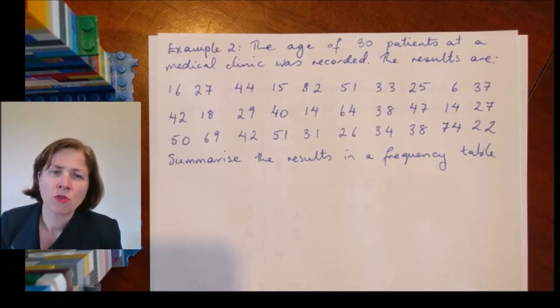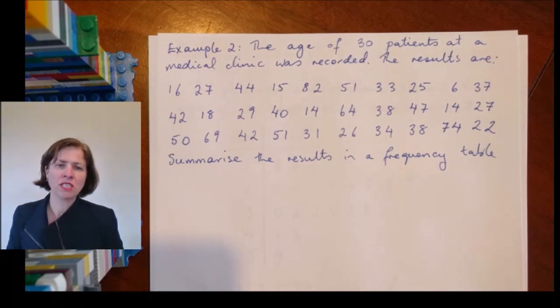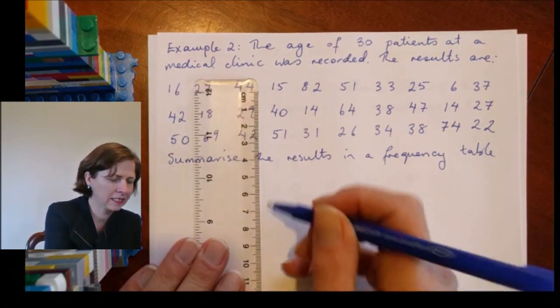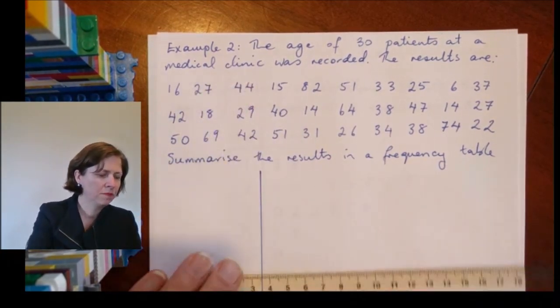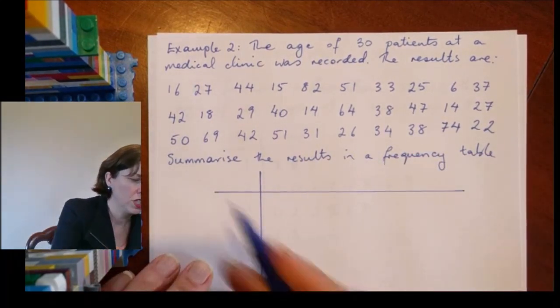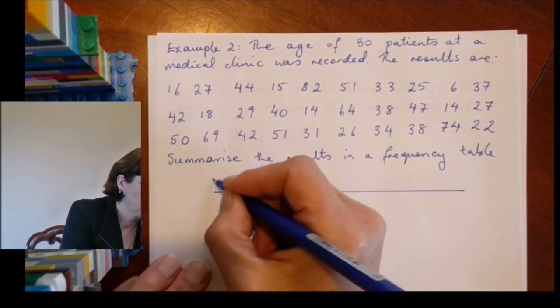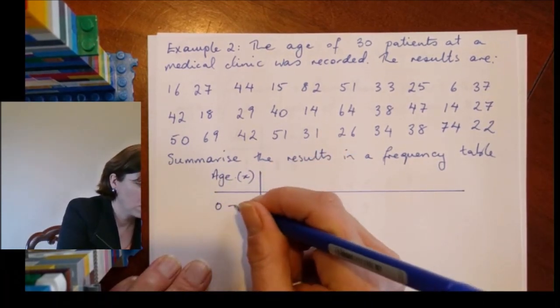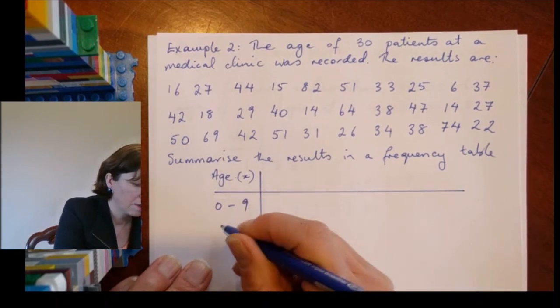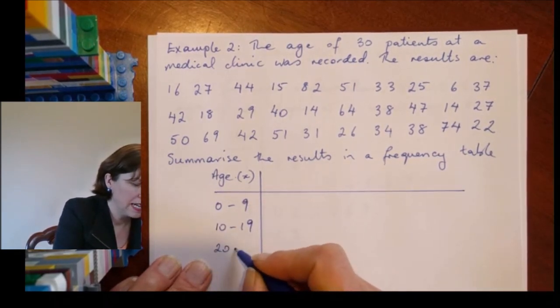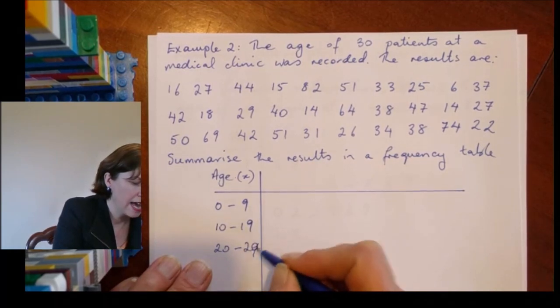So what I'm going to do is I'm going to group my numbers and I'm just going to put them in categories. So if I look at my x column, which is the age, I'm going to have from zero to nine, I'm going to have from ten to nineteen, from twenty to twenty-nine, and so on. And now I'm going to tally up my numbers.